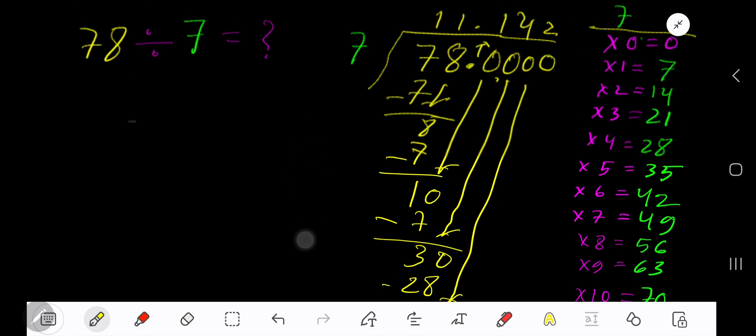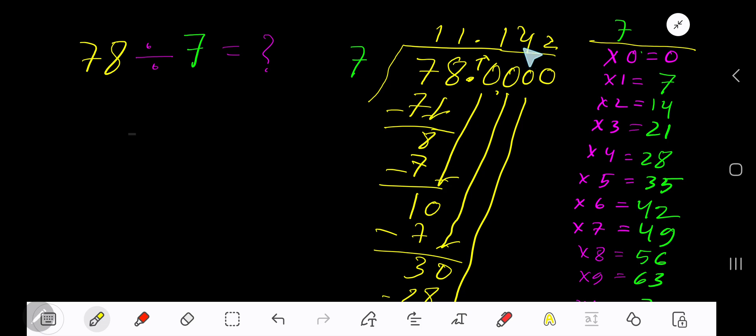You can bring down more 0s, but since we have gotten 3 places after the decimal, just place here three dots. The three dots mean that this process is continuing. 11.142... is the answer.